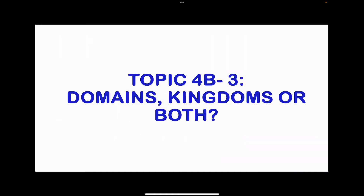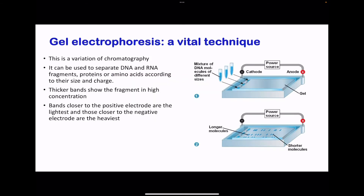Moving on to topic 4b3: domains, kingdoms, or both. Moving on to gel electrophoresis — this is a technique which is a variation of chromatography. In this case, we separate DNA and RNA fragments, then proteins or amino acids, according to their size as well as charge.